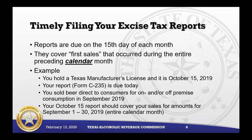Timely filing your excise tax reports: reports are due on the 15th day of each month and cover first sales that occurred during the entire preceding calendar month. For example, if you hold a Texas manufacturer's license and it is October 15th, 2019, your report C-235 is due today. You sold beer direct to consumers in September 2019, so your October 15th report should cover sales for September 1st through the 30th, 2019.